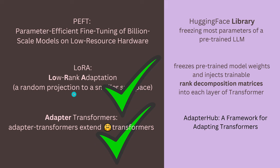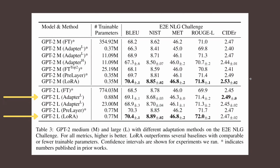Now you know LoRA. It freezes the pre-trained model weights and injects trainable matrices into each layer of the transformer. These matrices use the low-rank decomposition trick where you define a rank and get an approximation of the original weight matrix.